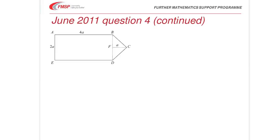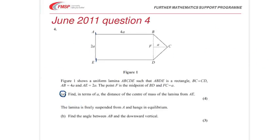Perhaps we'll go back and look at the question here. There's only one more bit to do. And it's quite a common question. They want to find the angle between AB and the downward vertical. When the lamina is suspended from A. In other words, from that vertex.